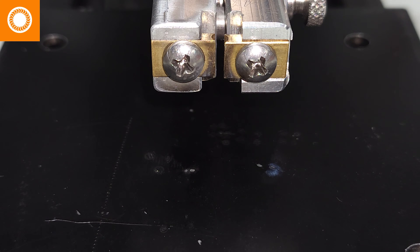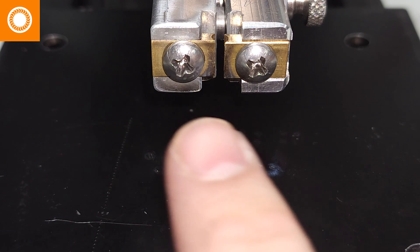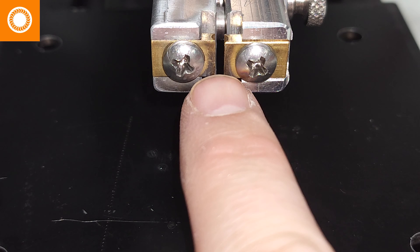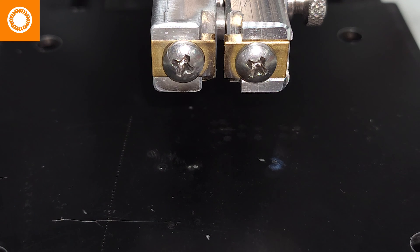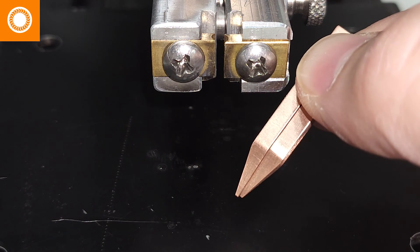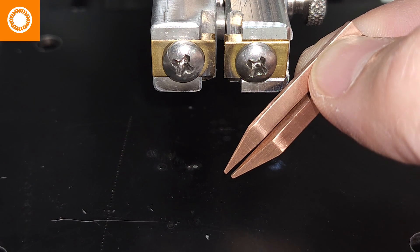In this case we have the welder set up to accept a round electrode that's typically used for thermal compression. If we want to incorporate a parallel gap electrode, which is these, this tutorial will show you how to do that.